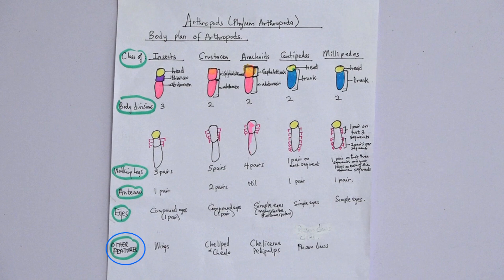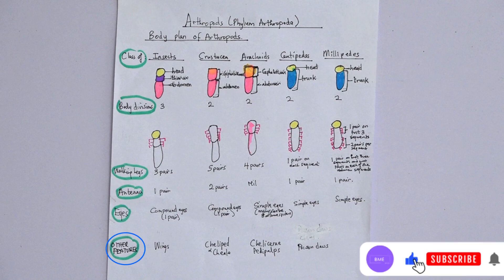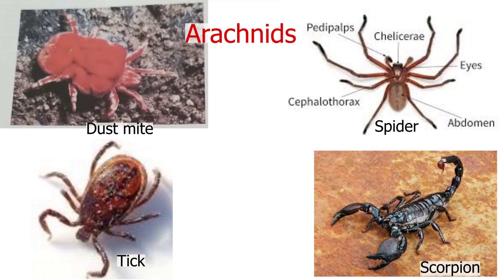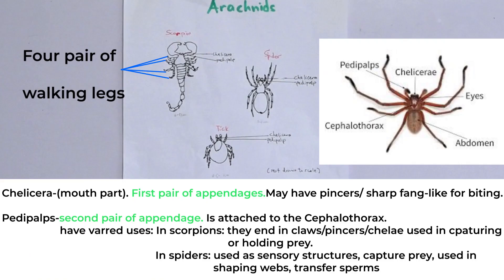Other characteristic features: insects have wings. Crustacea have a cheliped and chela — we'll explain those shortly. Arachnids have chelicerae and pedipalps. Arachnids have four pairs of legs; the chelicerae are the mouth parts at the first segment, and the pedipalps are the second pair of appendages. Chelicerae are used for various purposes.